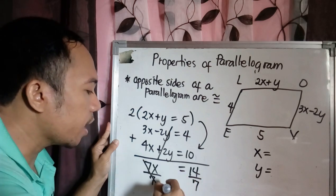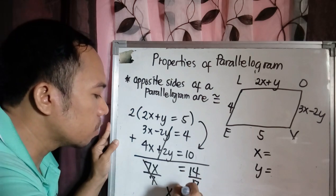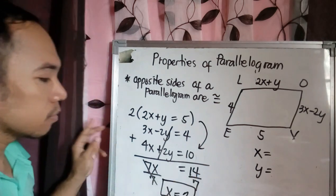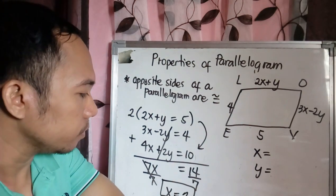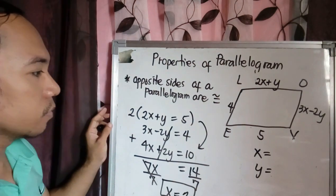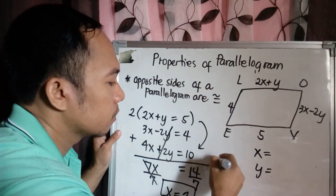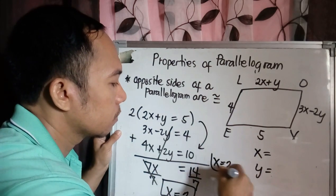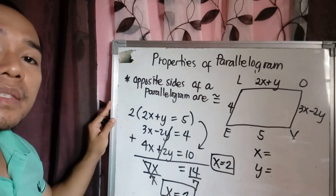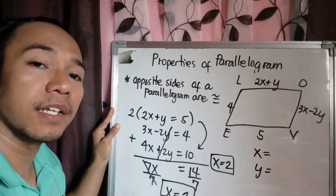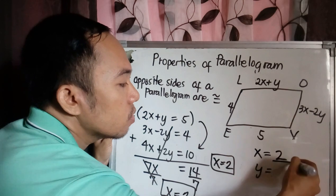So our X is 2. So if your X is 2, how will you get the value of Y? So we're done with our X, which is 2.